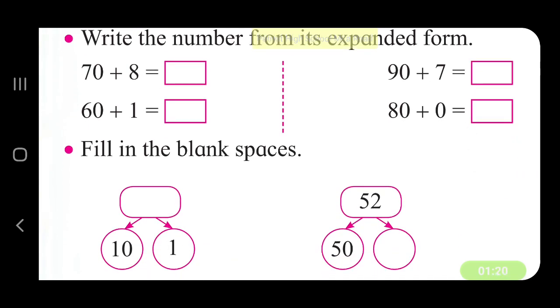Write the number from its expanded form. 70 plus 8 is 78. 60 plus 1 is 61. 90 plus 7 is 97. 80 plus 0 is 80.